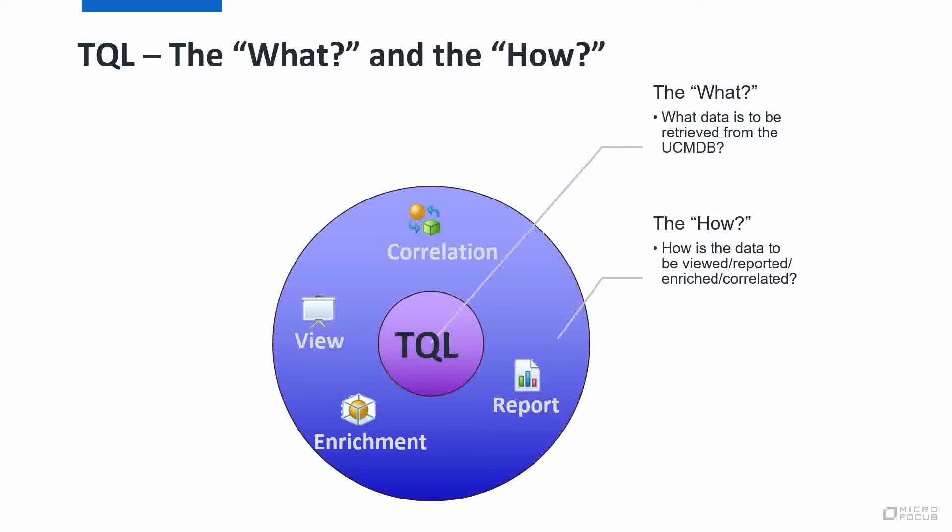TQL is kind of the what and the how — the what being the data that we get out of UCMDB through the TQL subsystem. You create your graphical query; that is the TQL subsystem. It sends that to the back-end, which uses the data access layer to actually execute those queries and then sends that data back and communicates with whichever subsystem wanted the information.